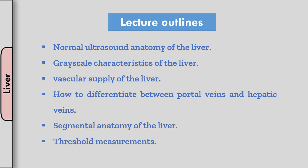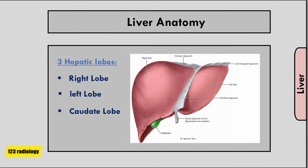The objective of this talk is to discuss the normal ultrasound anatomy of the liver. We will discuss grayscale characteristics of the liver, vascular supply of the liver, and how to differentiate between portal veins and hepatic veins. We will discuss the segmental anatomy of the liver as well as threshold measurements for the liver.